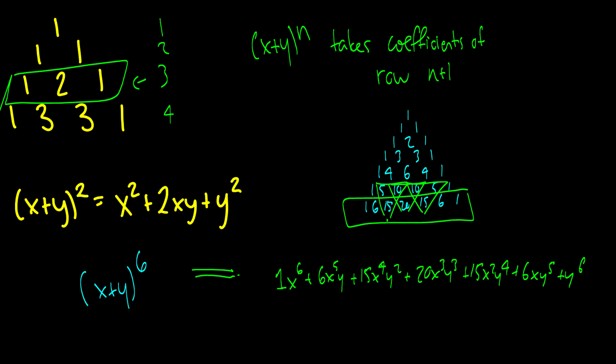The result is: x^6 + 6x^5 y + 15x^4 y^2 + 20x^3 y^3 + 15x^2 y^4 + 6x y^5 + y^6. I was able to do this that quickly just from Pascal's triangle. Step 1: find the row. Step 2: remember the pattern where x starts at the highest power and goes down one each term, and y starts at 0 and goes up one each term until you've filled out that row.